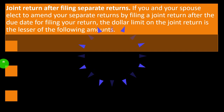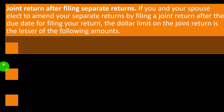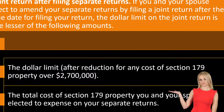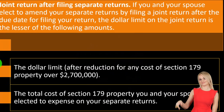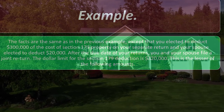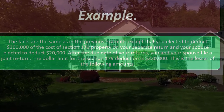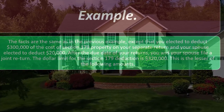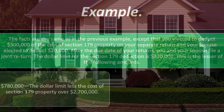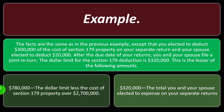Joint return after filing separate returns: if you and your spouse elect to amend your separate returns by filing a joint return after the due date for filing your return, the dollar limit on the joint return is the lesser of: (1) the dollar limit after reducing for any cost of Section 179 property over the $2,700,000, or (2) the total cost of Section 179 property you and your spouse elected to expense on your separate returns. Example: using the same facts as the previous example, except you elect to deduct $300,000 of Section 179 property on your separate return and your spouse elected to deduct $20,000. After the due date, you and your spouse file a joint return. The dollar limit for the Section 179 deduction is $320,000 — this is the lesser of $780,000 (the dollar limit less the excess cost over $2,700,000) and $320,000 (the total you and your spouse elected to expense on your separate returns).